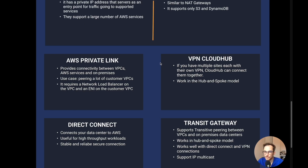Moving to connectivity between on-premises and cloud resources: AWS PrivateLink provides connectivity between VPCs, AWS services, and on-premises services. The use case is when you want to peer many customer VPCs — it requires a network load balancer on the service VPC and an ENI on the customer VPC. VPN CloudHub is used when you have multiple sites each with their own VPN — it can connect them together using a hub-and-spoke model, such as different offices around the world connected via VPN.